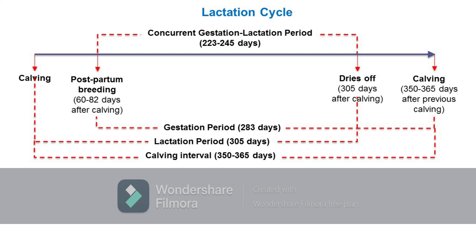Meanwhile, it is recommended that milking of the gestating or pregnant cow be stopped 45 to 60 days before the expected date of calving. The period from the time when the cow is no longer being milked until the time of calving is called the dry period.